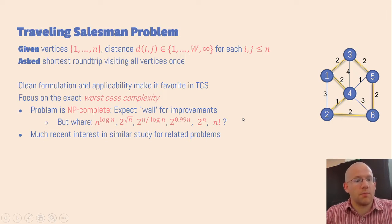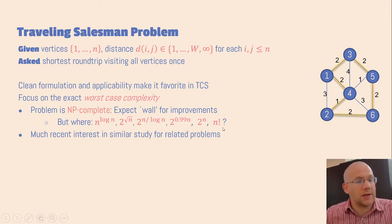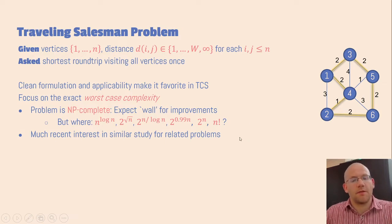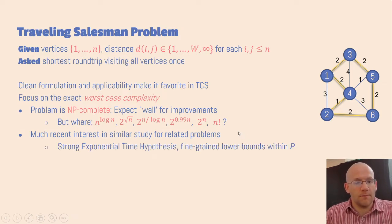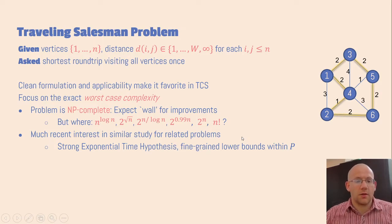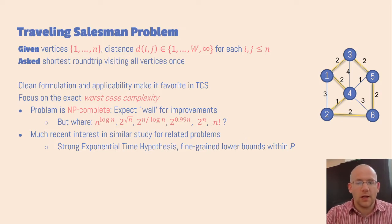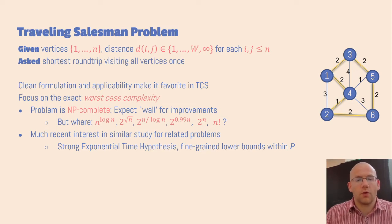There was much recent interest in a similar study for related problems, in particular for the k-CNF satisfiability problem. The strong exponential time hypothesis, which says that brute force for that problem cannot be improved significantly, led to a great amount of work on fine-grained lower bounds on the complexity of problems in the complexity class P.